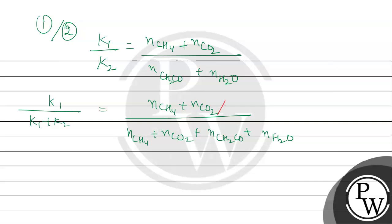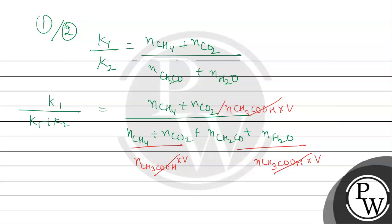In all divisions, the number of moles of CH3COOH multiplied by the volume appears, so this term cancels out. We can see that the denominator represents the total number of moles, and since the number of moles of CH4 equals the number of moles of CO2, we can write 2 × n(CH4) divided by n_total.